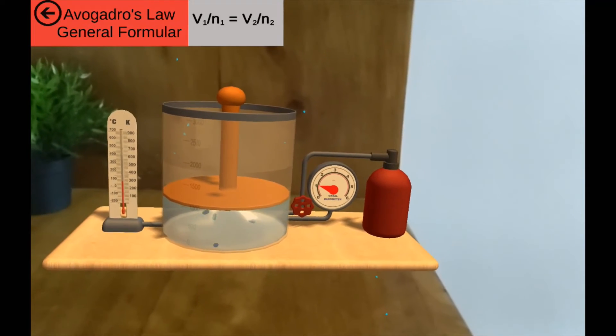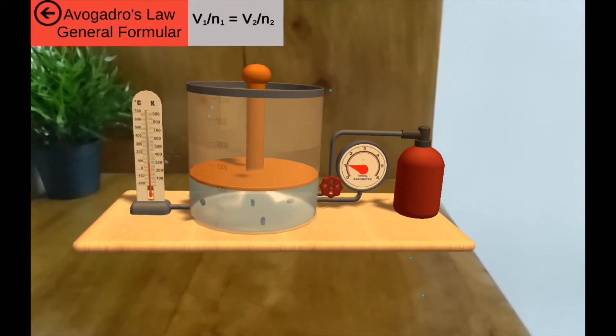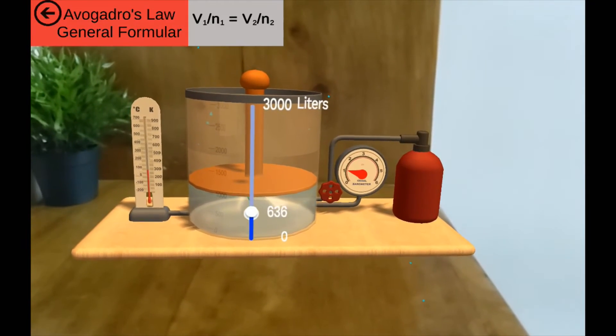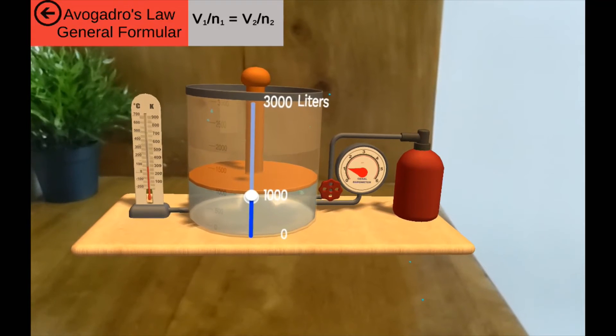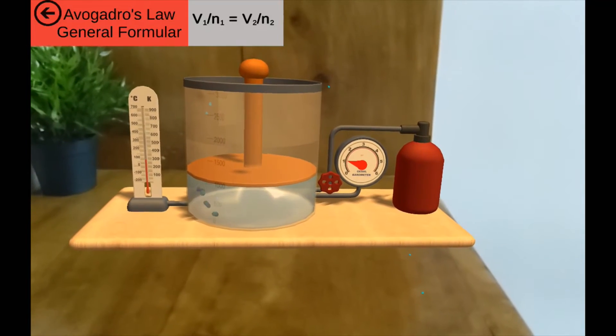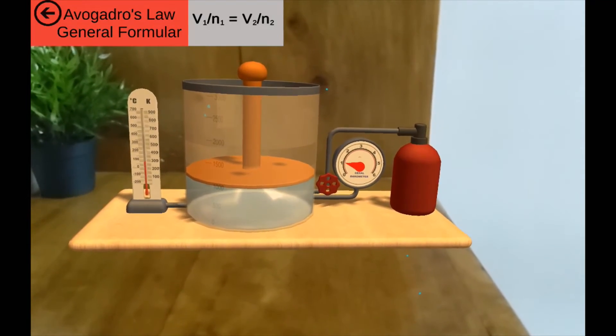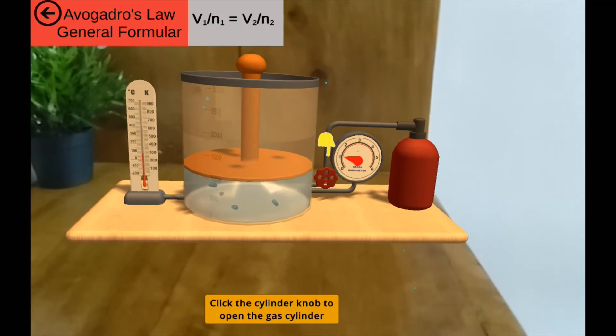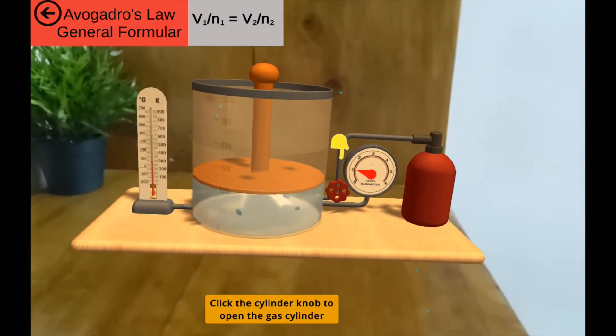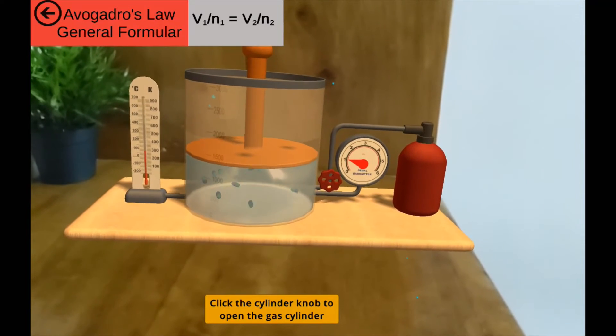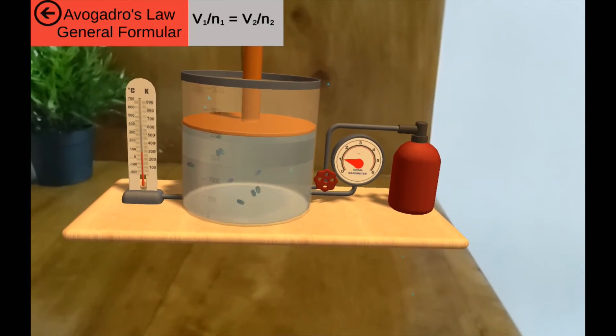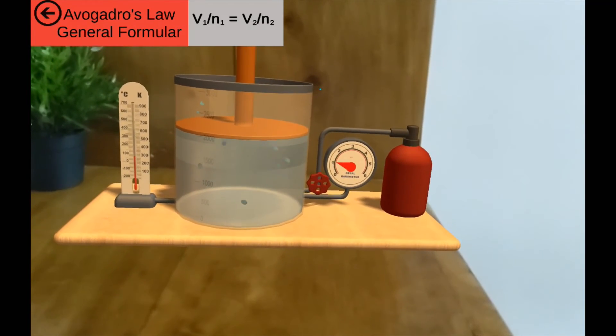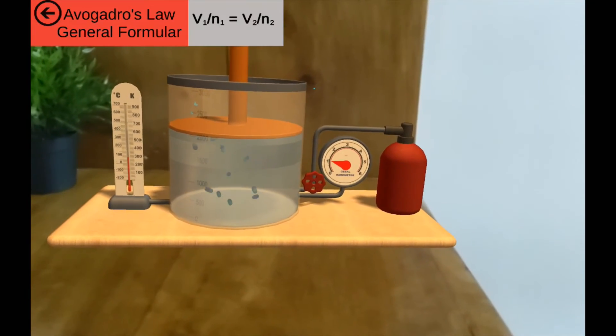If you counted five, then yes you are right. So our amount is going to be five moles and the initial volume there is one thousand liters. Let's put on our gas cylinder and watch what happens to the particles as well as the volume, and try counting how many particles enters the container. If you counted five again, yes you are right. And as you can see the volume of the gas increased to two thousand liters. So as the number of particles doubled, so did the total volume double also.